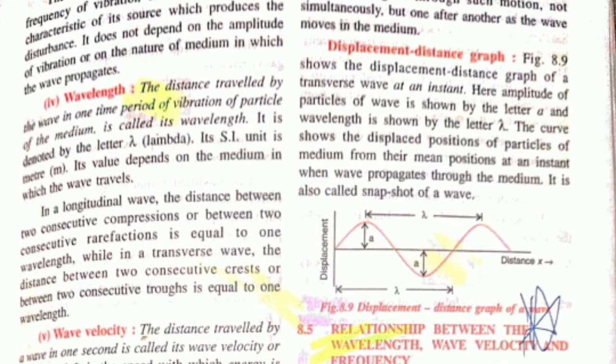Fifth is wave velocity: the distance travelled in one second is wave velocity. Its SI unit is meter per second. Do learn these terms, because this chapter will come in detail in 10th class. Longitudinal waves and transverse waves are there, so this chapter is quite important from the perspective of class 10.